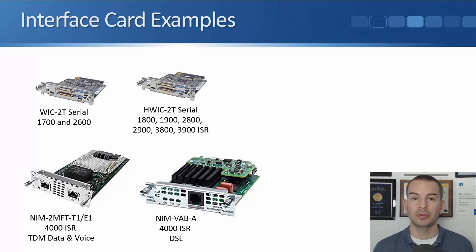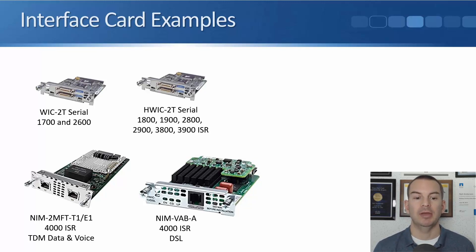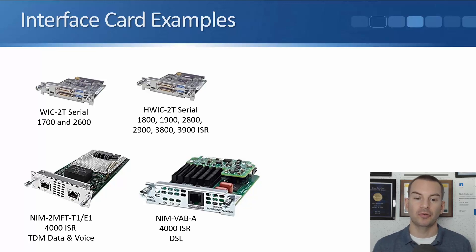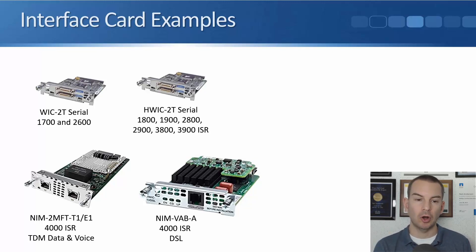Down in the bottom left, for the newer model 4000 series ISR routers, we've got a NIM module — which is actually a larger module than the WIC modules. This is the NIM-2MFT-T1E1, so it's got two T1 or E1 ports which you can configure as either. This can be used for data over leased lines or for TDM voice calls going to the public switched telephone network. And down in the bottom right we've got a NIM-VAB-A, also for the 4000 series ISRs, which is a DSL card.